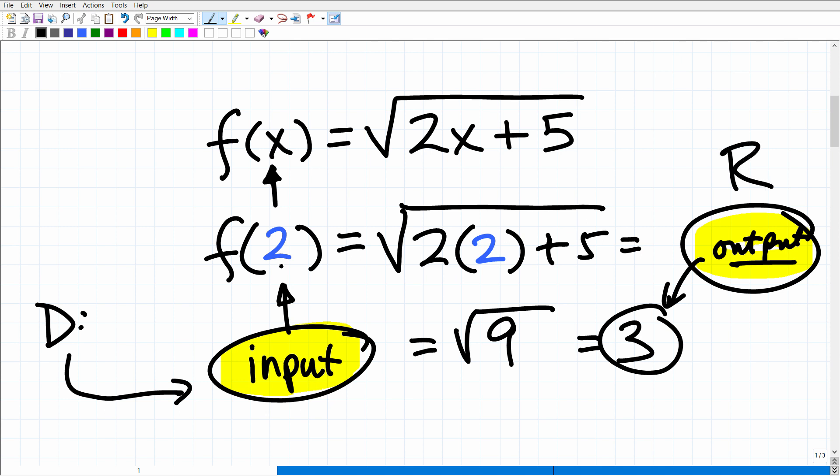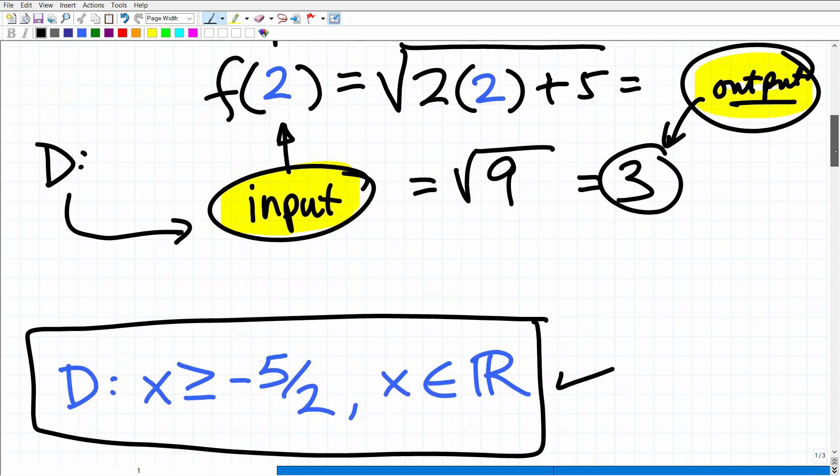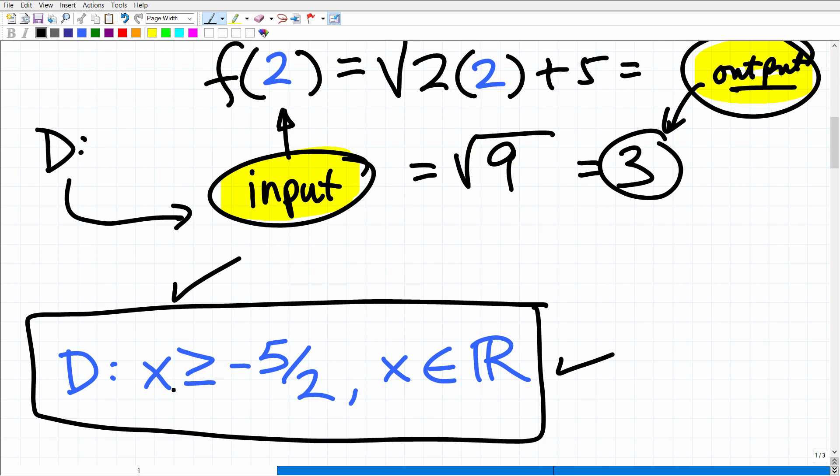But again, here, 2 works in this function, but that's only one number in this entire set of numbers. We're looking for the entire set of numbers. And, of course, I did show you the answer. All the numbers that would work in this function are greater than or equal to negative 5 halves.